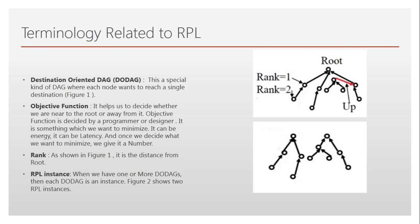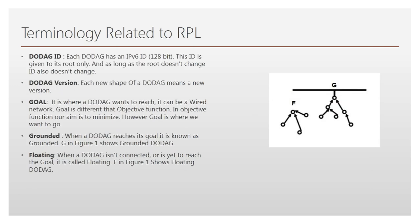An RPL instance is formed when we have one or more DODAGs. Each DODAG is an instance. If you look at the figure on the right side of the screen, we have two DODAGs — each wants to reach a common destination. In one DAG every node wants to reach one destination, and similarly in the other. So these are two instances of the RPL.